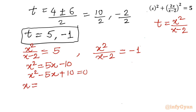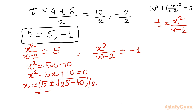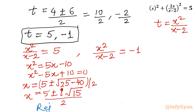Applying the quadratic formula: x = (5 ± √(25 - 40)) / 2 = (5 ± √(-15)) / 2 = (5 ± i√15) / 2. This is a complex solution, so we will reject it as it does not give real solutions.